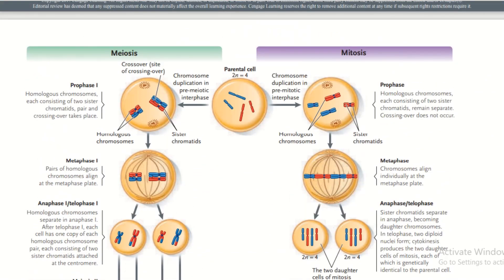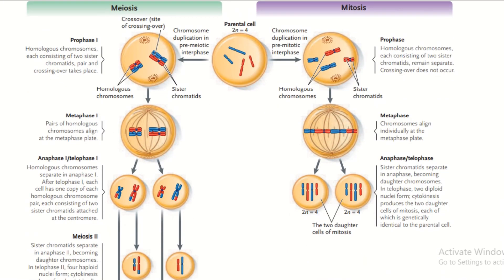Differences between meiosis and mitosis: in Prophase I of meiosis, homologous chromosomes — each consisting of two sister chromatid pairs — come together and crossing over takes place. In prophase of mitosis, homologous chromosomes each consist of two sister chromatids but remain separate, and crossing over does not occur.